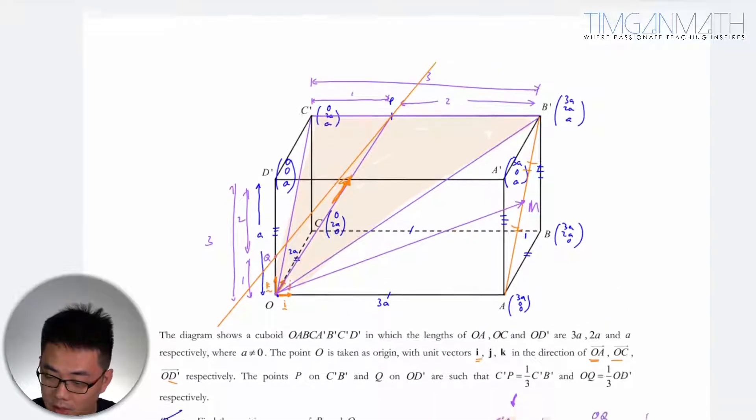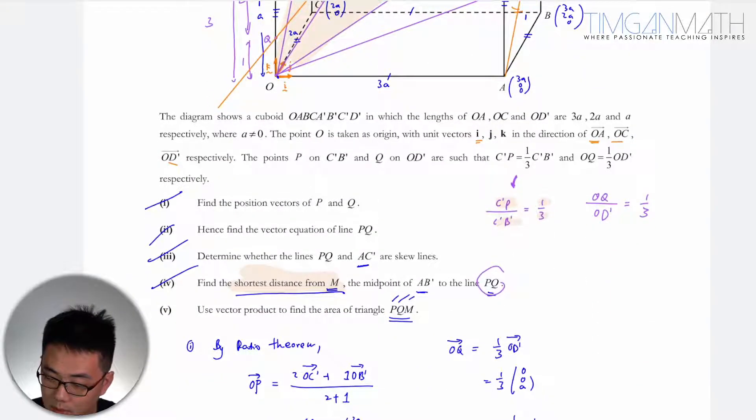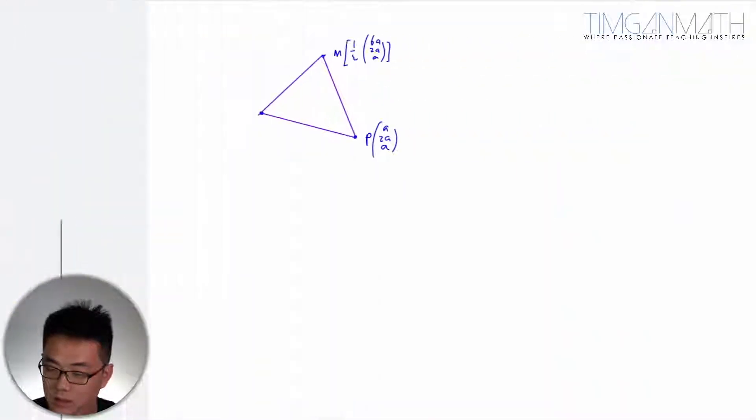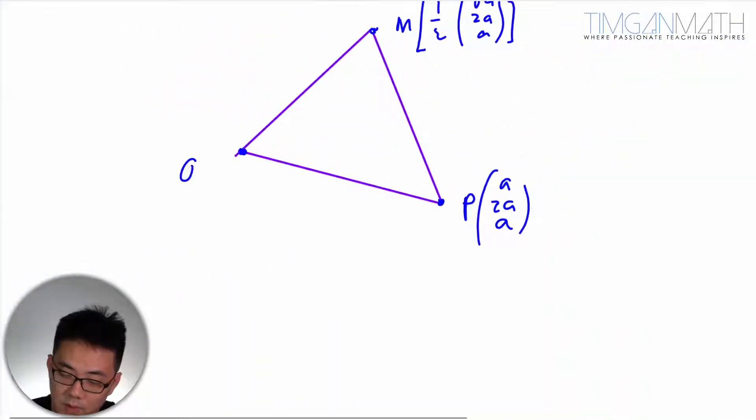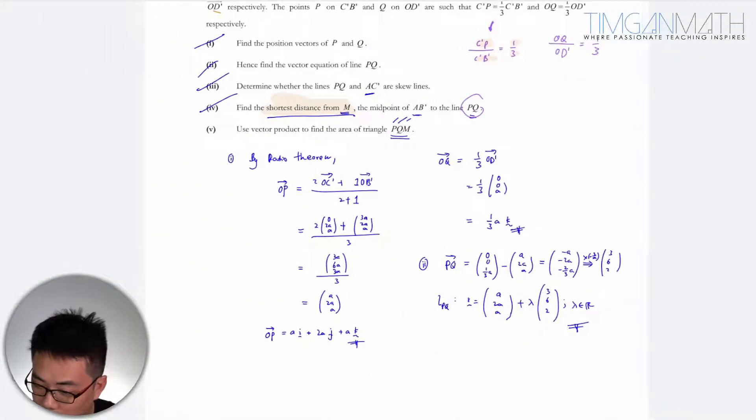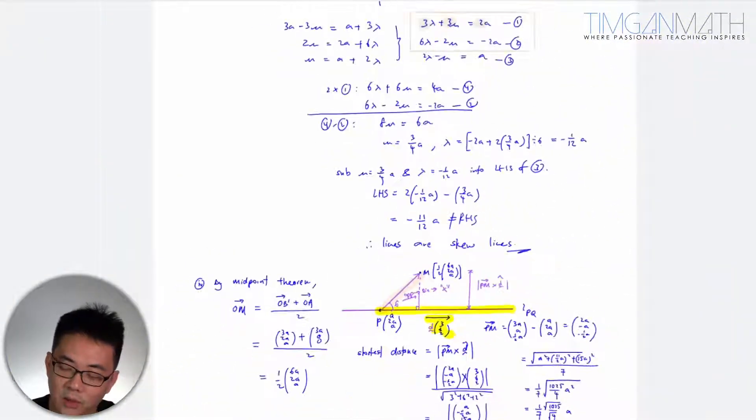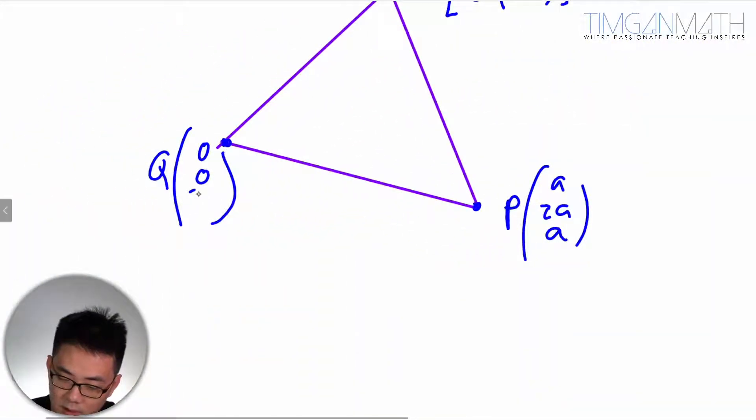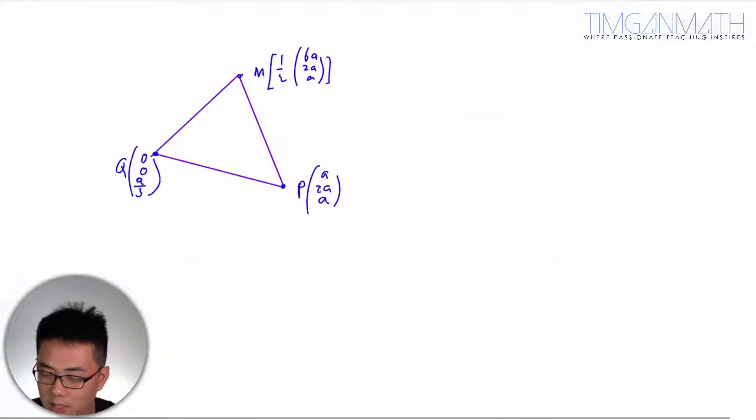Then after which we got PQM. So I need Q. Q is 3A, 0, 0, 3A. So Q is actually just 0, 0, 3A here. Am I right? No, I'm not. My A over 3. A over 3. Great.